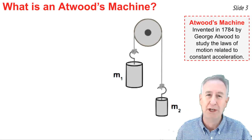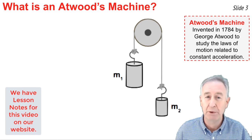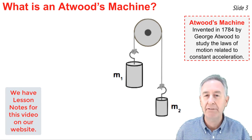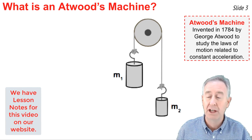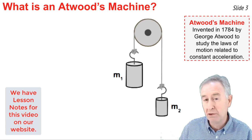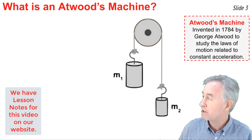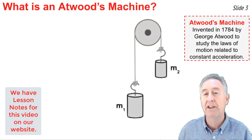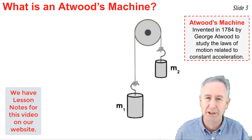This is an Atwood's machine. An Atwood's machine is an apparatus that was invented by George Atwood in 1784 in an effort to study the mechanical laws of motion related to constant acceleration. As you see, the machine consists of two masses connected by a string. The string is wrapped over a pulley that rotates. As the more massive object is lowered, the less massive object rises upward and they do so with a constant acceleration.